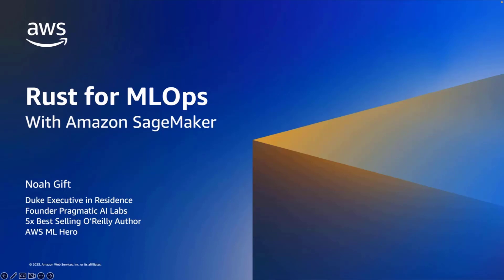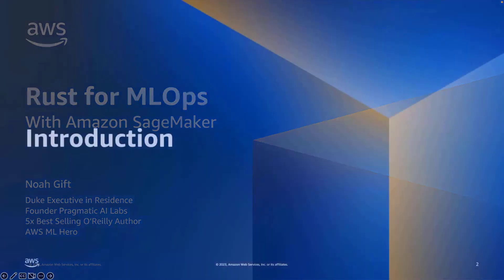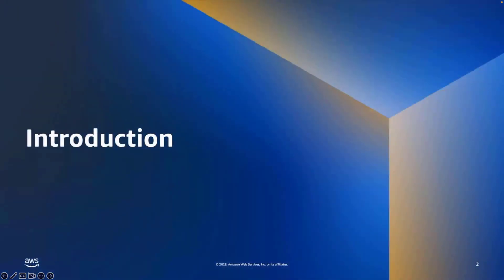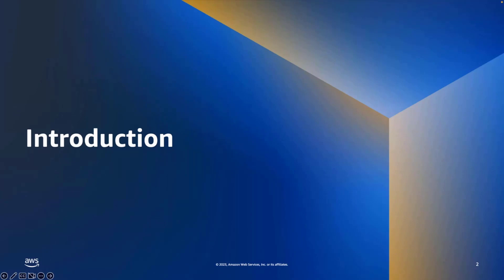Let's go ahead and get started. We have a lot to cover. Inside this presentation, we're going to talk about how Rust is a modern systems programming language with unique features, ML Ops and its importance in machine learning projects, and an overview of AWS SageMaker and how it supports ML Ops.